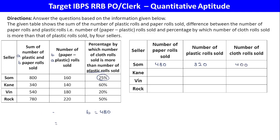Next row: sum is 300 plus 400 plus 480 — wait, sum divided by 2 gives 240. Then paper minus plastic: 240 minus 140 equals 100. Cloth is 60% extra over plastic, so 60% of 100 is 60, meaning cloth equals 160.